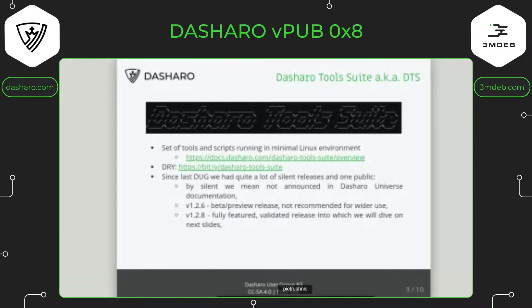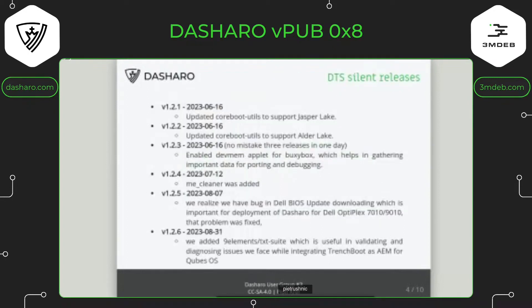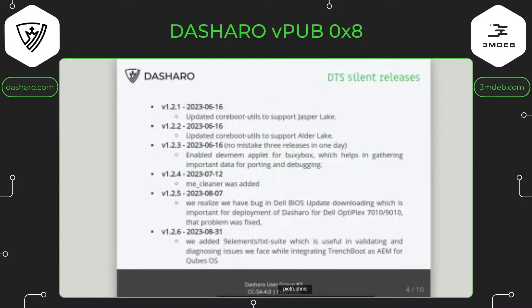Since the last meeting we were able to do some silent releases without announcements. On the Dasharo Universe you could see there was 1.2.6, which was a beta preview release for some users, and then 1.2.8, which is a fully featured validated release that I'll discuss on the slides. Let's go through history because 1.2.8 contains all these improvements from previous versions. On June 16th we did quite a lot of releases — we added Jasper Lake support for coreboot utils and enabled the busybox devmem application so we can access memory, which is useful for porting and debugging.